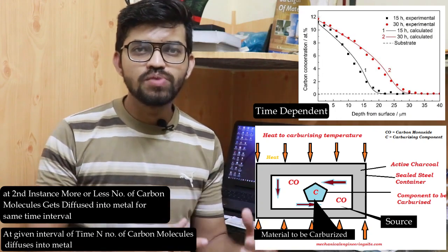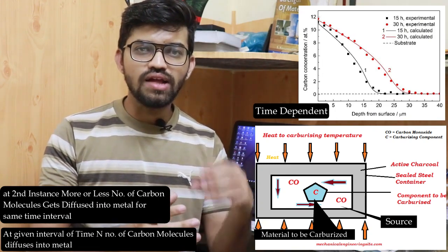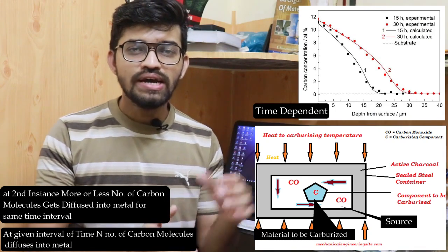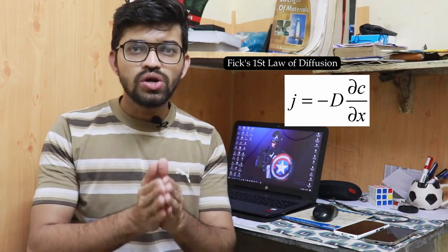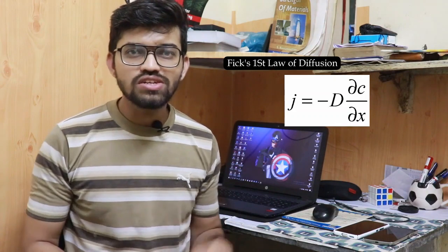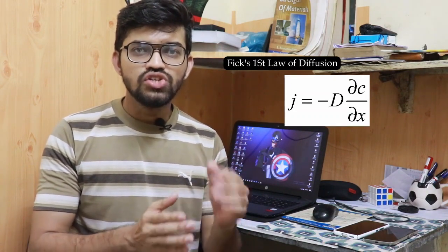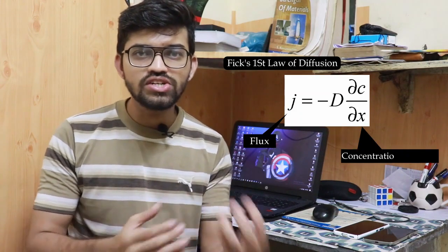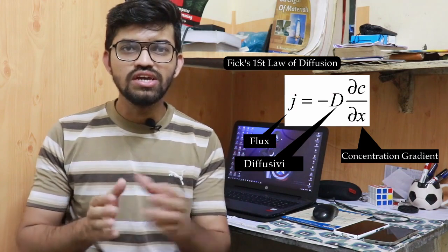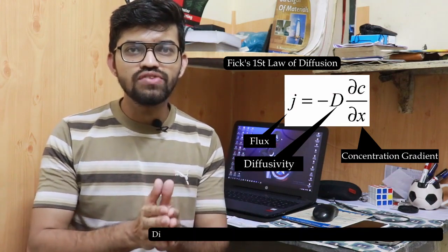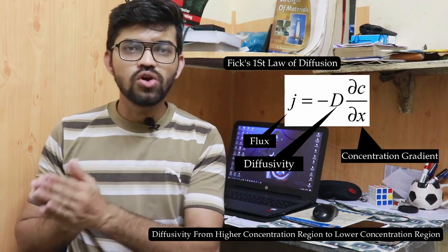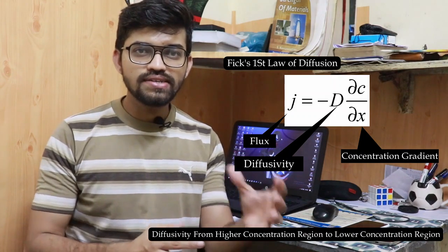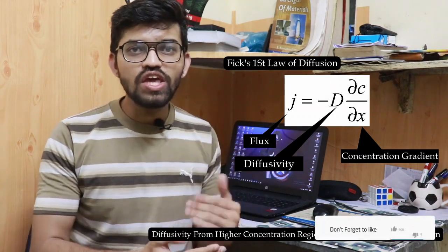So how can we derive an equation for this unsteady state condition? Since the second law is time-dependent, let's recall the First Law of diffusion: J (flux) = −D · (dc/dx), where dc/dx is the concentration gradient and D is the diffusivity. The negative sign indicates diffusion from higher concentration to lower concentration. We can derive the Second Law by taking the derivative of the First Law, considering both space and time.